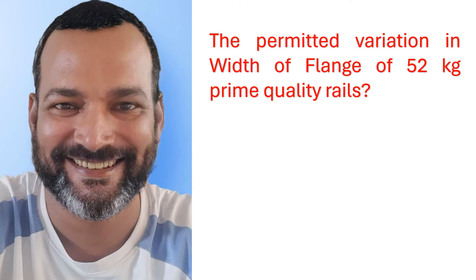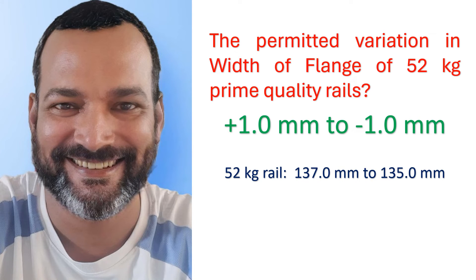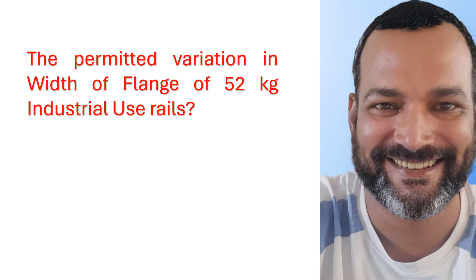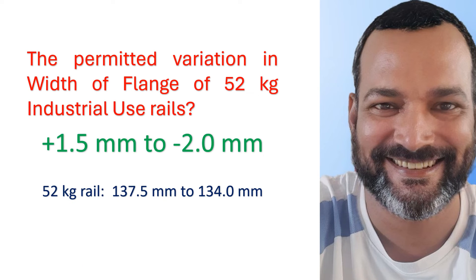The permitted variation in width of flange of 52 kg prime quality rail is +1.0 millimeter to -1.0 millimeter. For the 52 kg rail it will be 137.0 mm to 135.0 mm. The permitted variation in width of flange of 52 kg industrial use rail is +1.5 millimeter to -2.0 millimeter, giving a range of 137.5 mm to 134.0 mm.